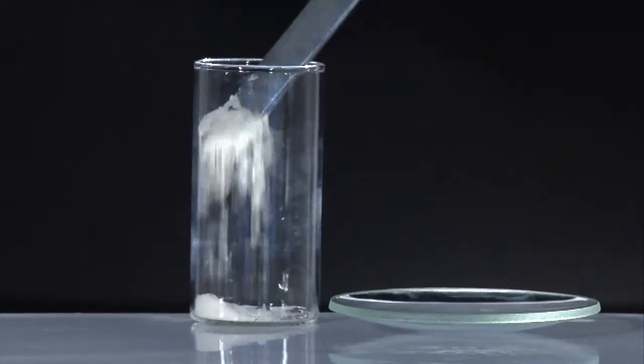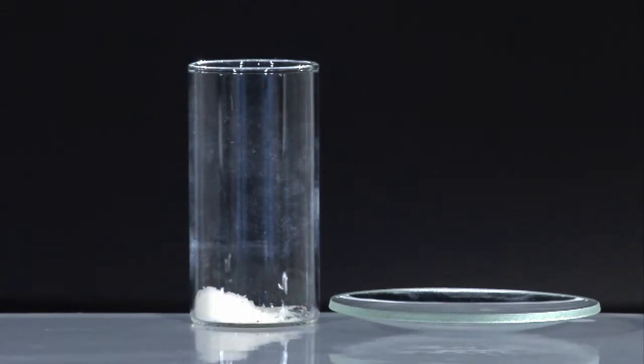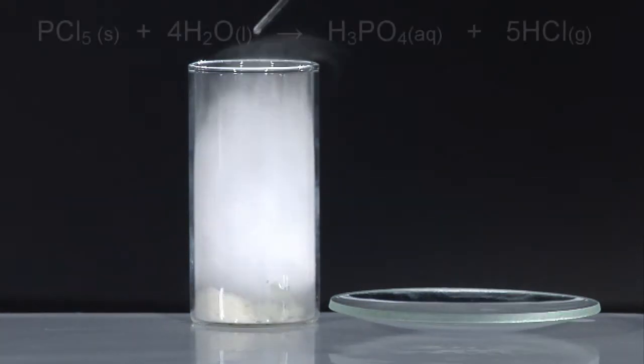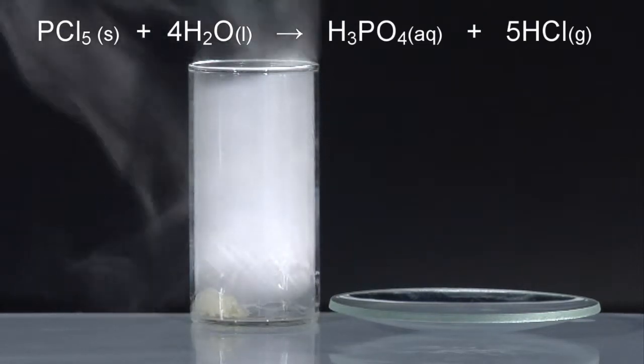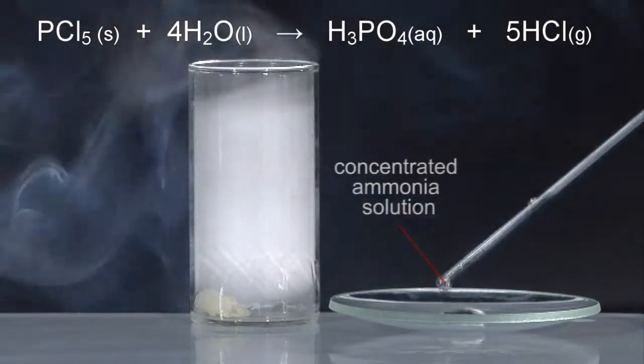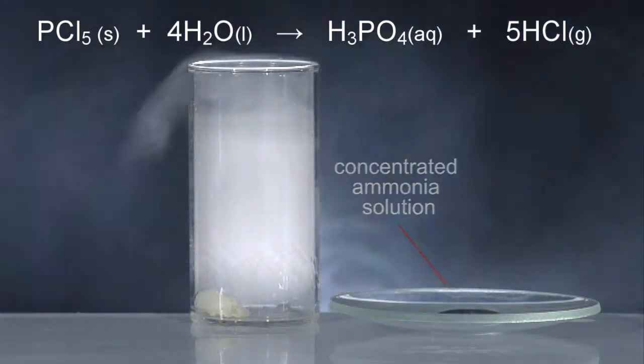In this second test, a few drops of water are added to some solid phosphorus pentachloride and then concentrated ammonia solution is placed in the watch glass just to the right of the sample tube.